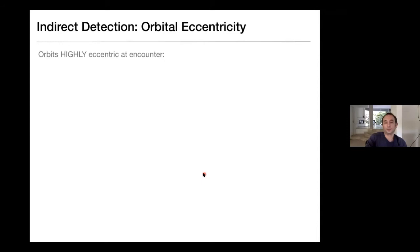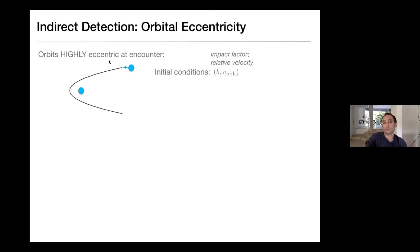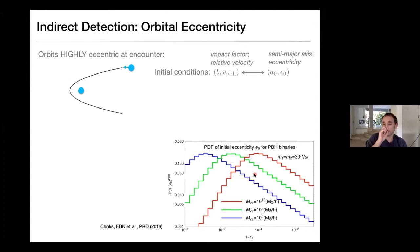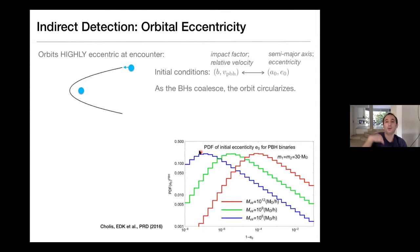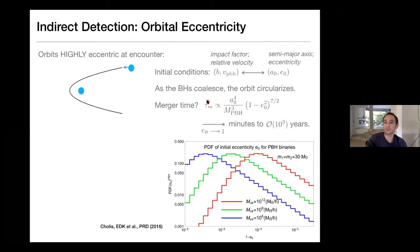The second signature is eccentricity. For the binary capture mechanism, the initial conditions — the impact parameter and relative velocity — map directly onto the semi-major axis and eccentricity of the binary produced. The PDF of the initial eccentricity, depending on the halo mass hosting the pair of primordial black holes at 30 solar masses, shows that the eccentricity is very large, very close to one. As the black holes coalesce, the orbit circularizes, but the merger time is very short for eccentricities approaching one. Mergers can happen from minutes after binary capture to thousands of years.